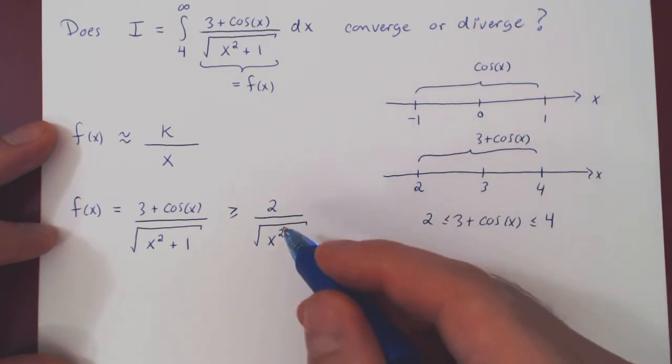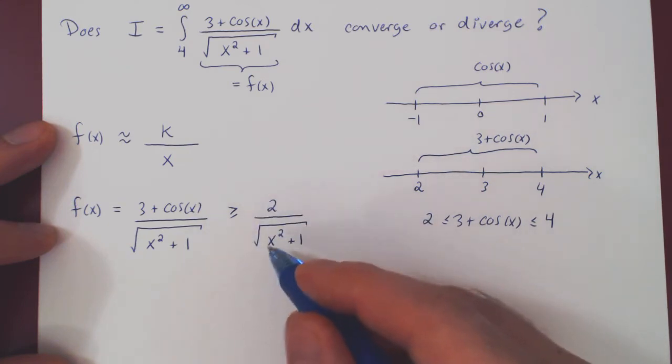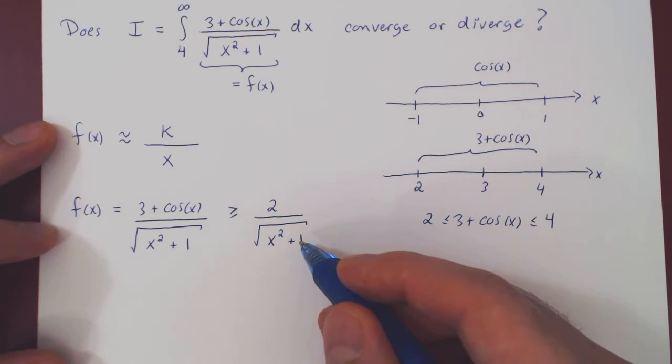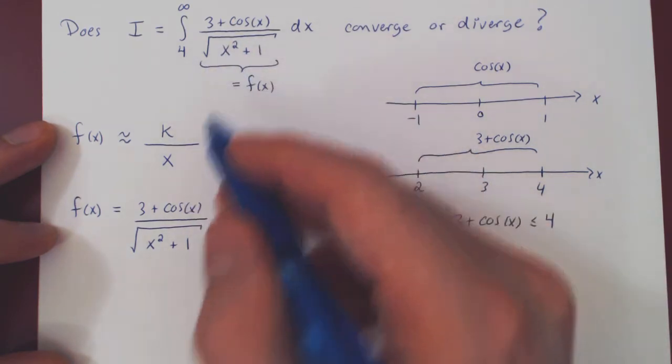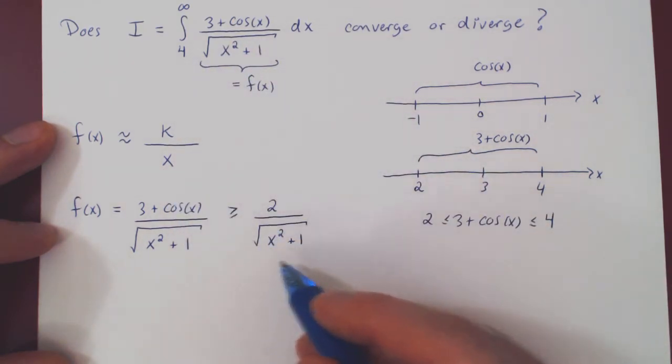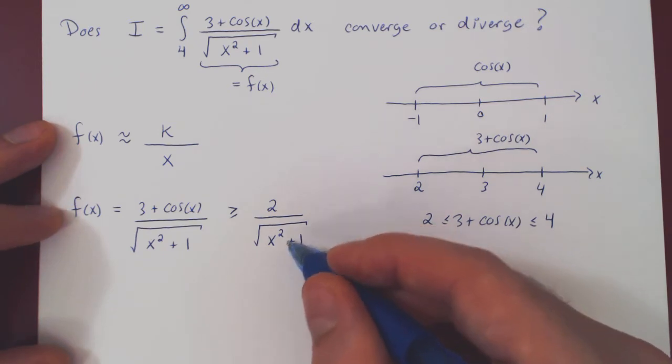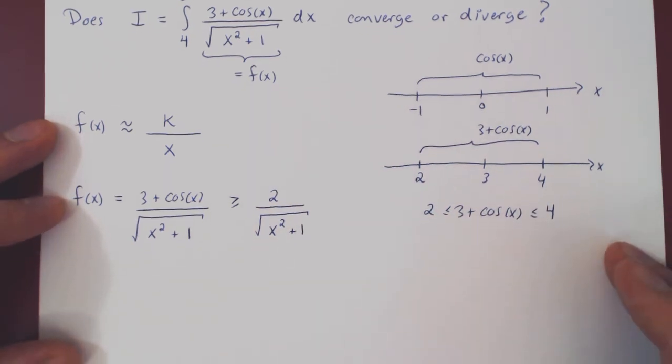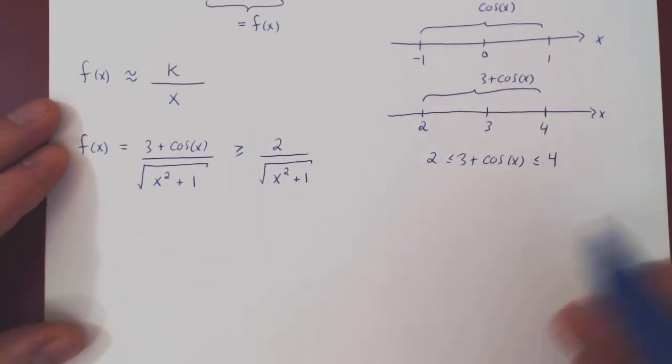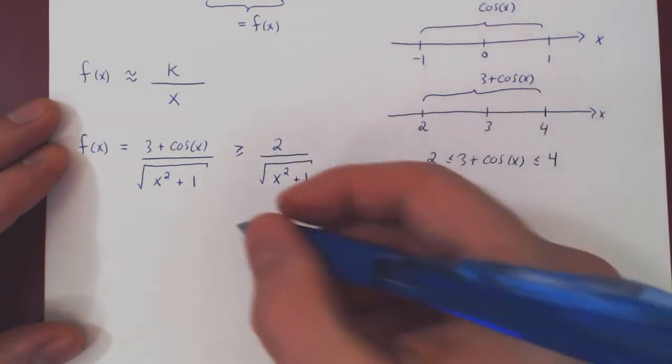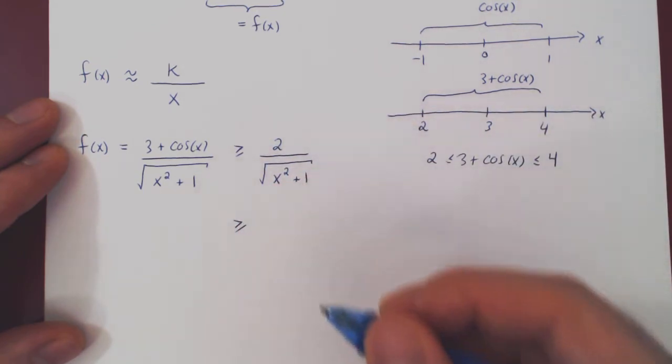Now, the only problem here is this is still going to give us a rather unpleasant integral, because of the root of x² + 1. But as we've said, this should be roughly when x is big, simply x. How can we, or can we, drop this 1? That's the next question, because we want another inequality of this type.